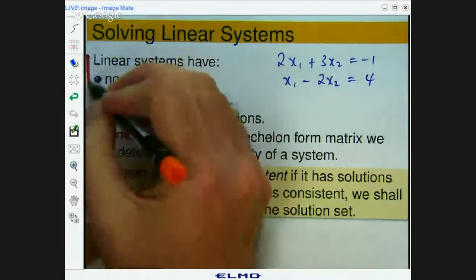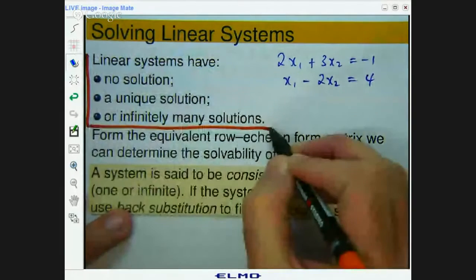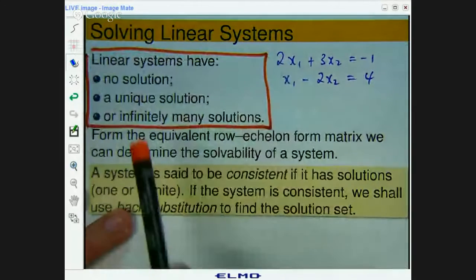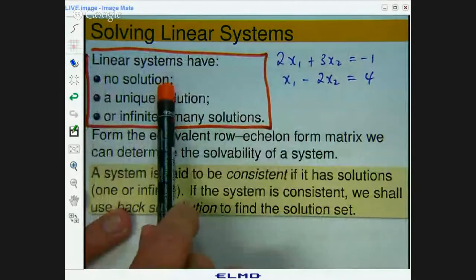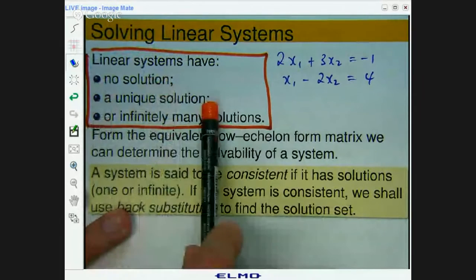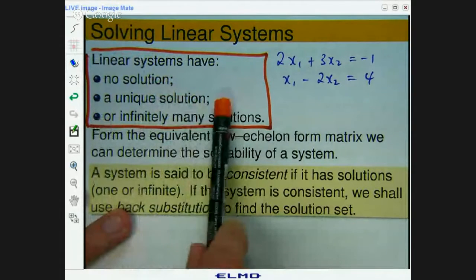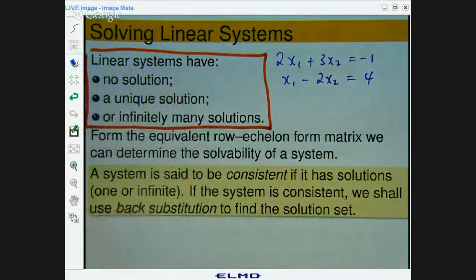Linear systems have one of the following situations. A linear system either has no solution or one and only one solution, which we call a unique solution, or there can be an infinite number of solutions.